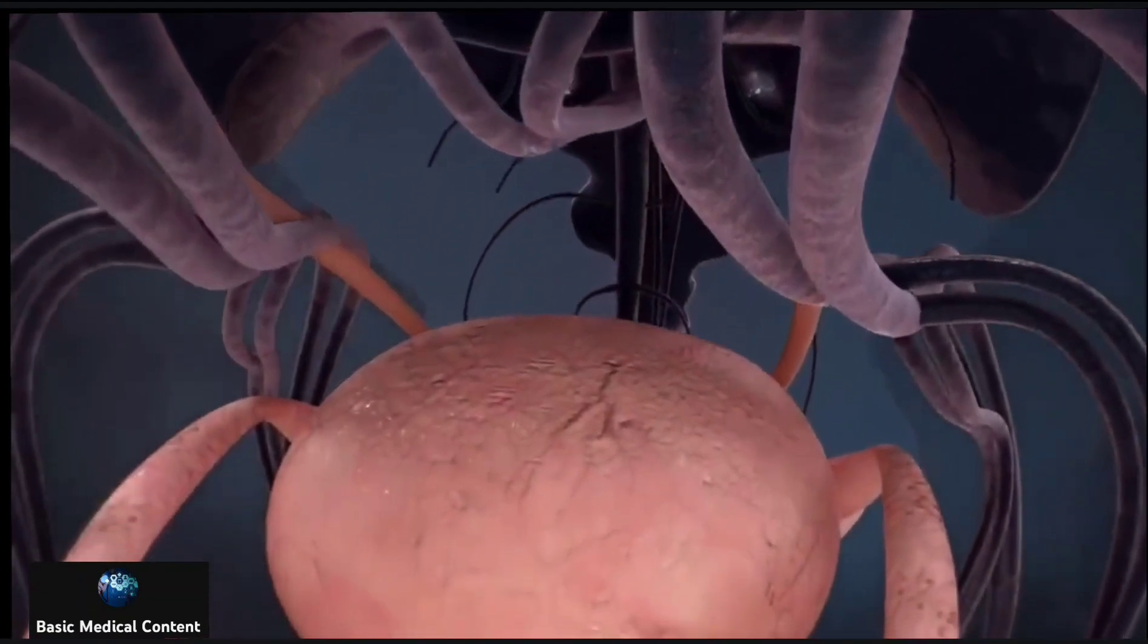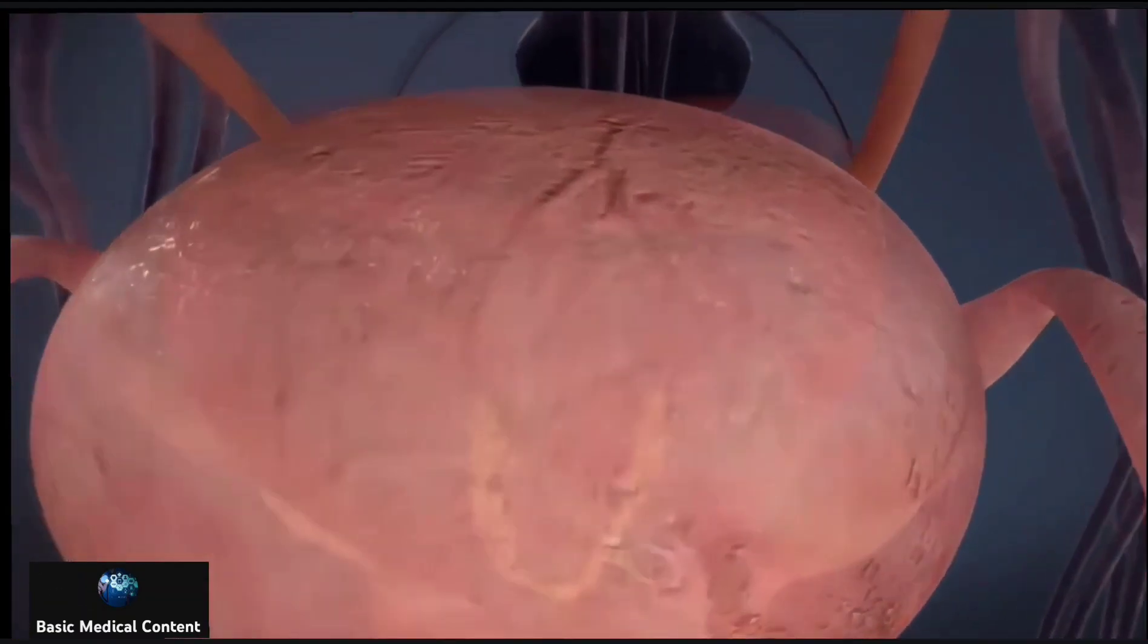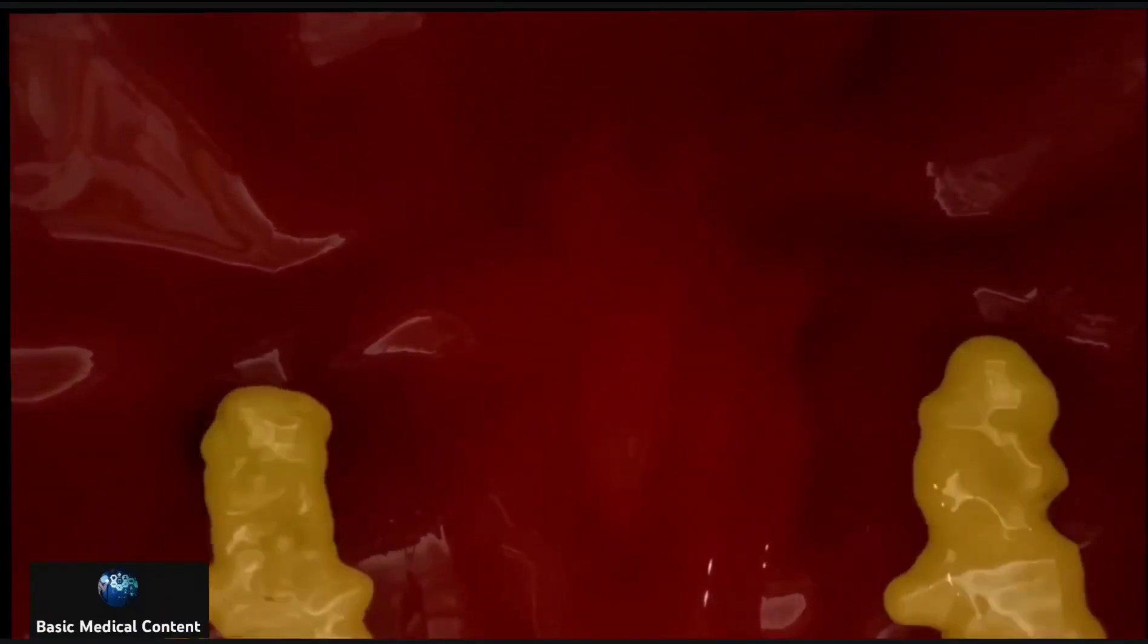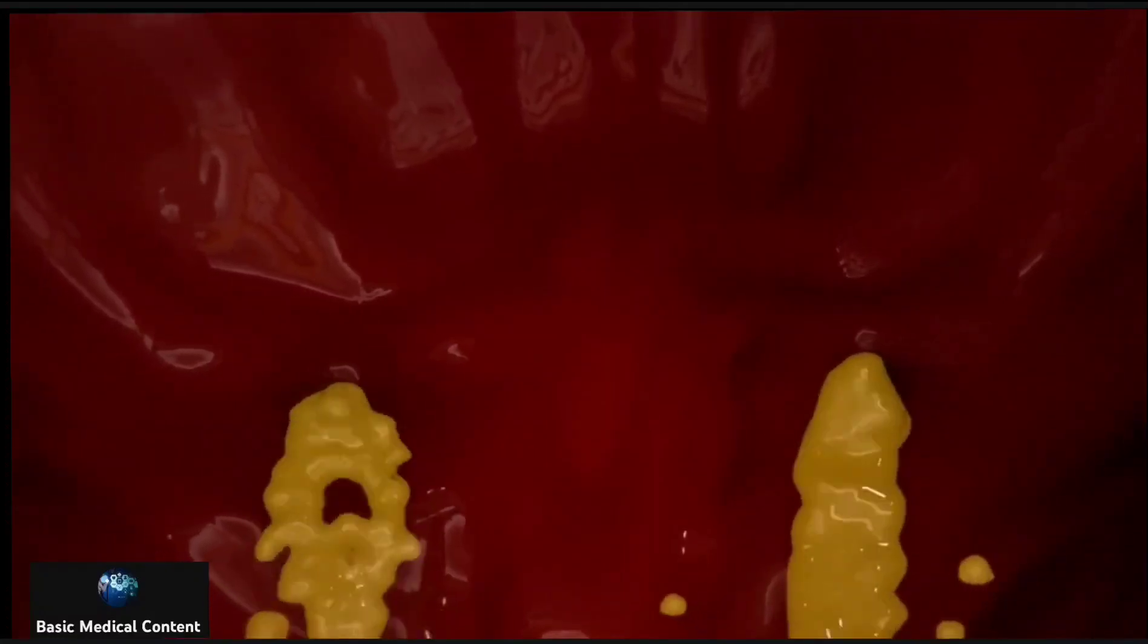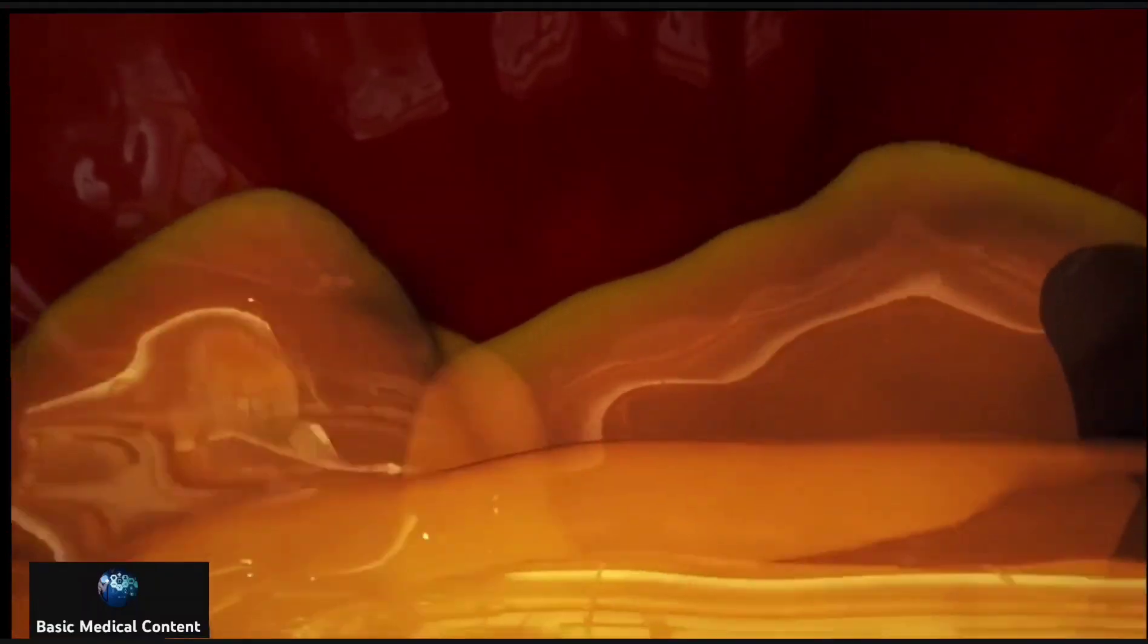The urine then enters the bladder. The bladder is about the size and shape of a pear when empty.